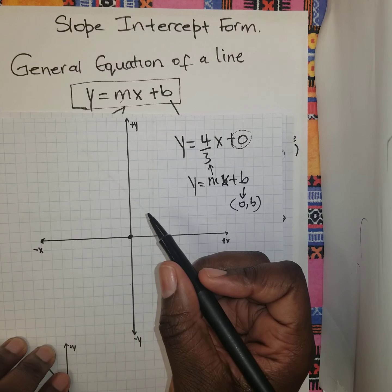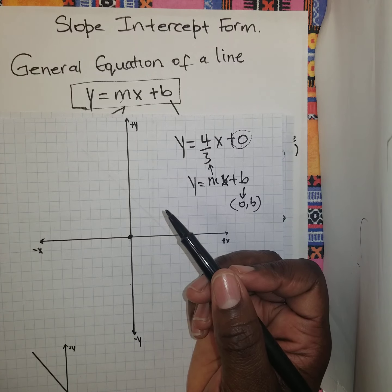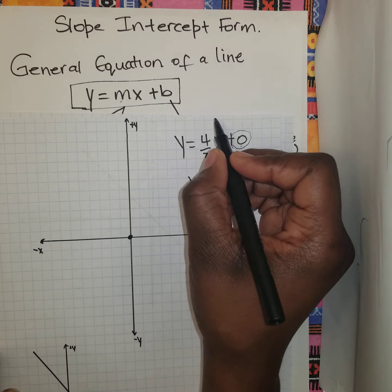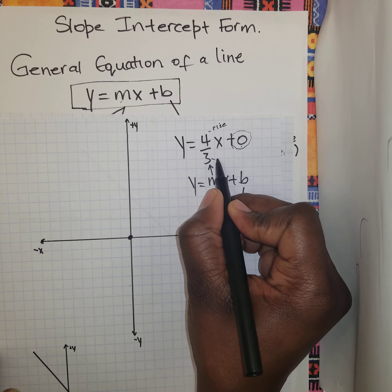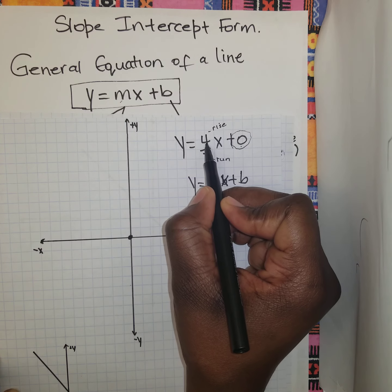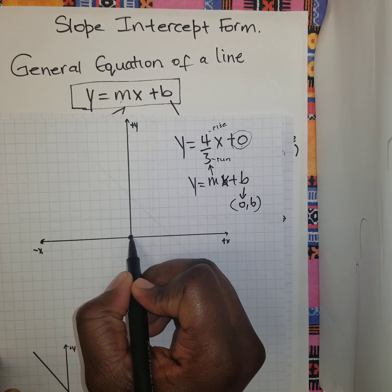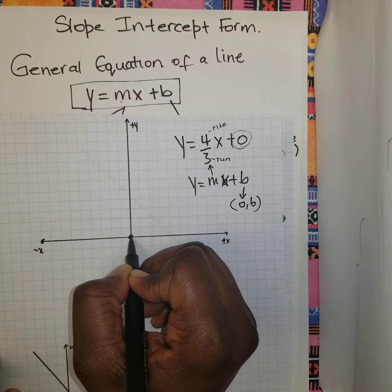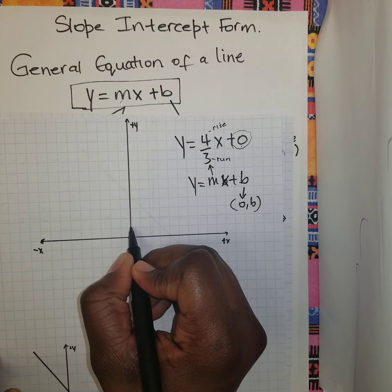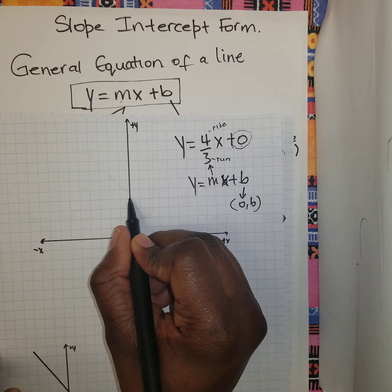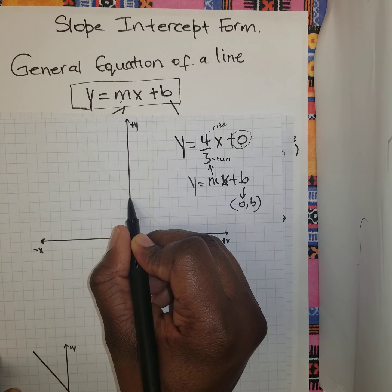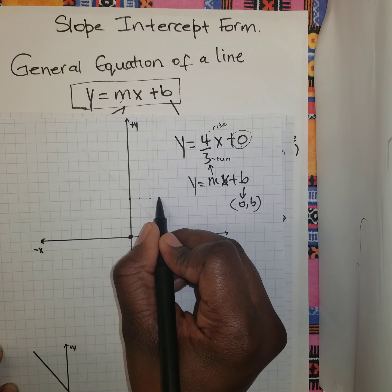From the origin, we identify the slope: the numerator is the rise and the denominator is the run. The rise is positive 4, so from your y-intercept you move 4 units upwards — 1, 2, 3, 4. From that point, you move 3 units to your right, because the run is positive 3. Positive means go to the right — 1, 2, 3.